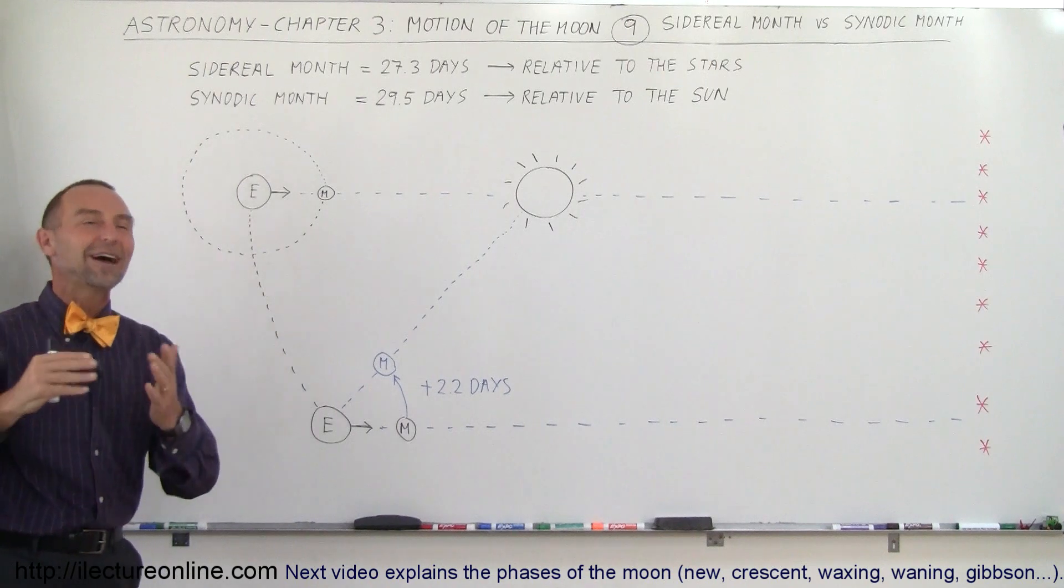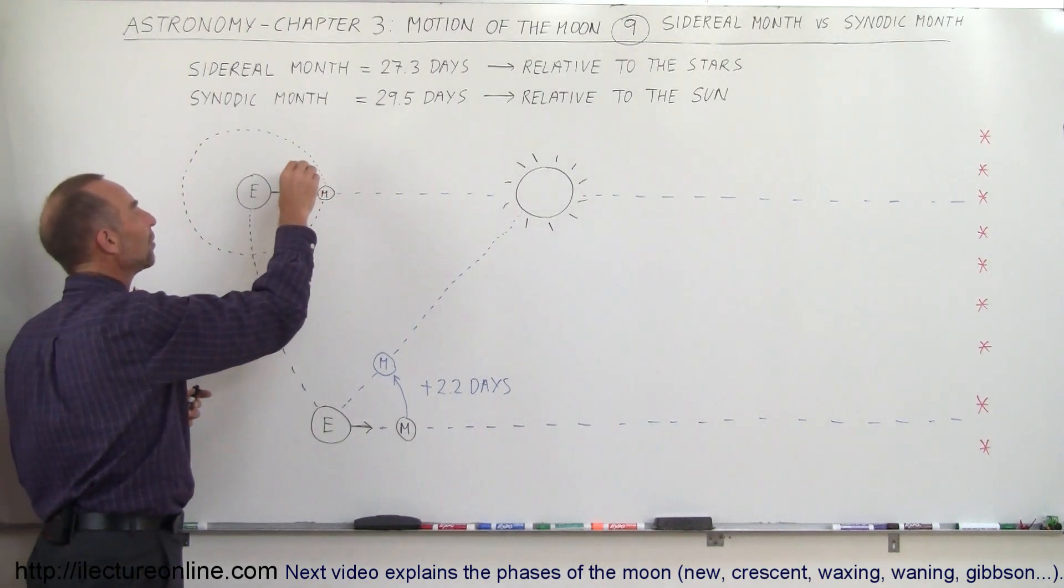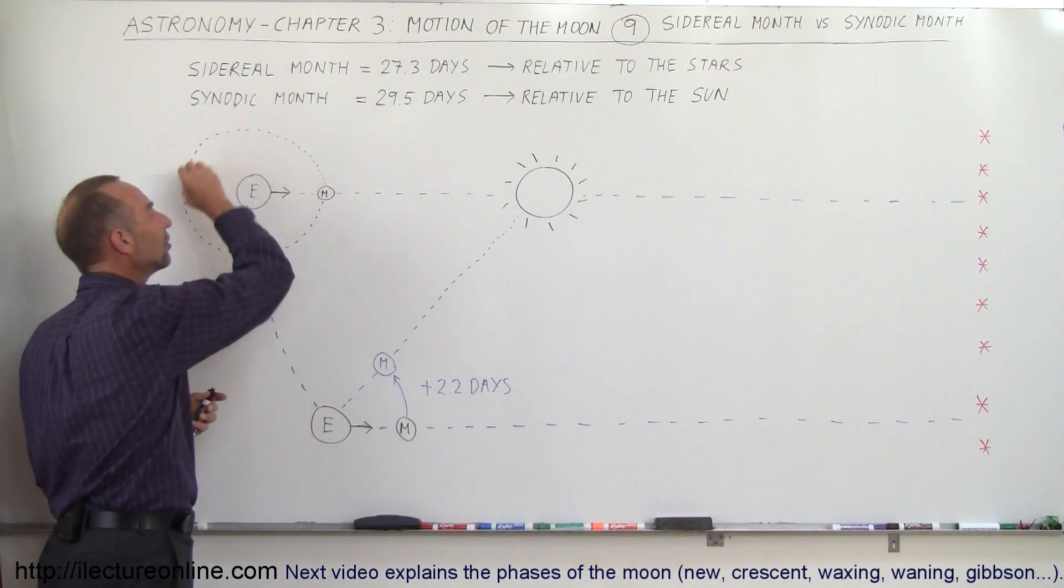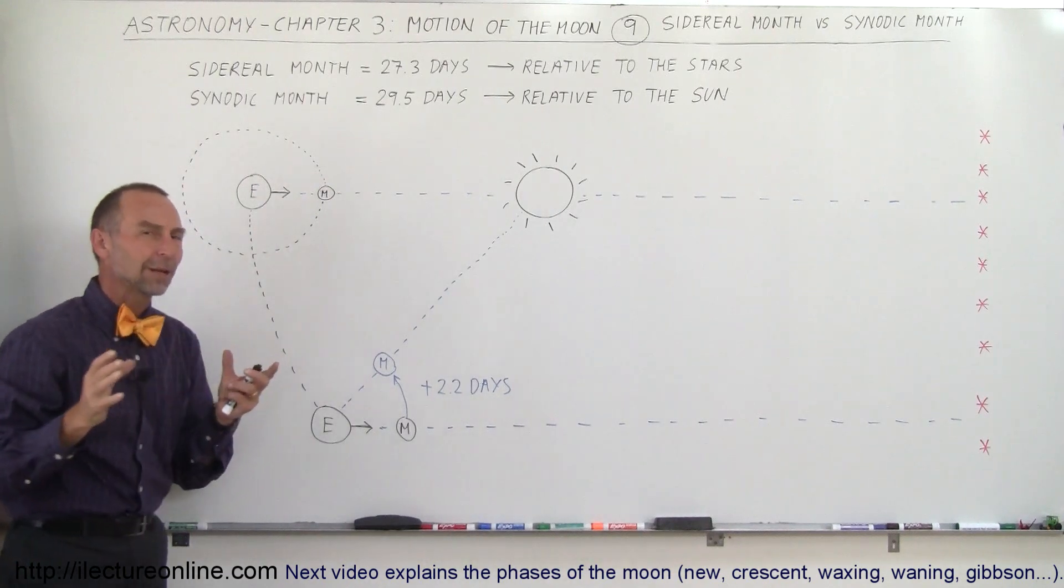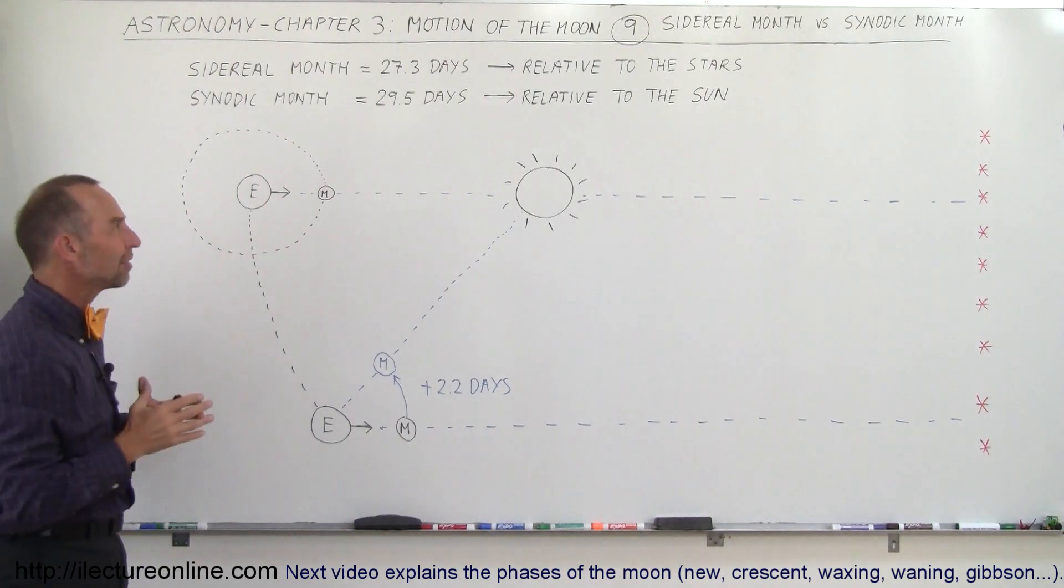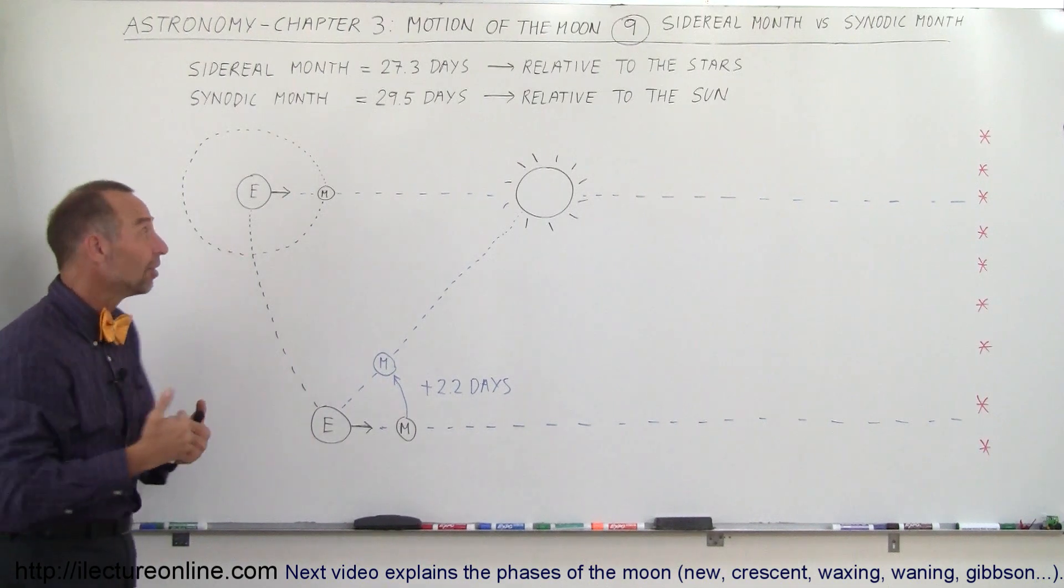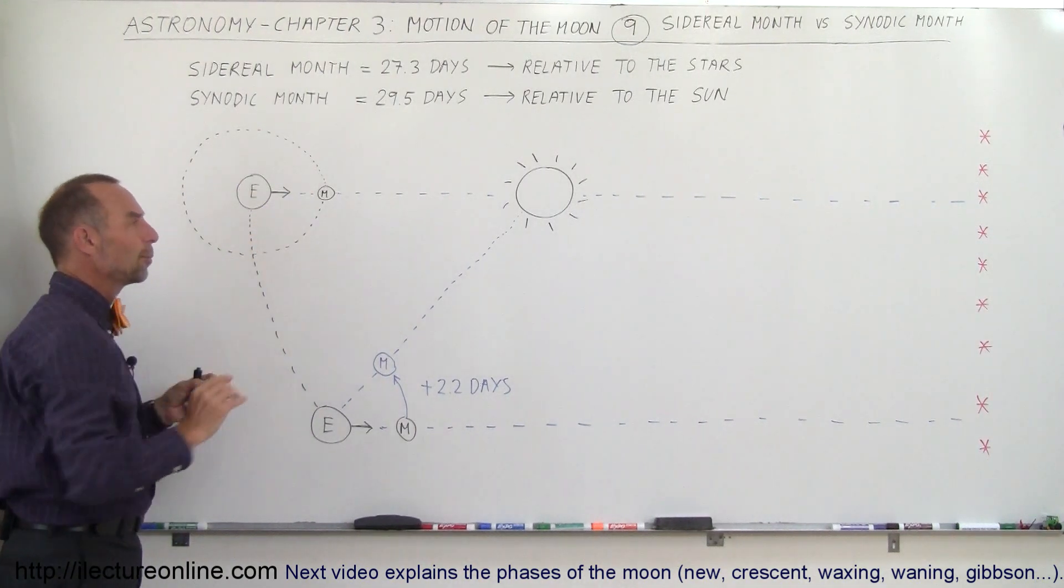It takes 29.5 days for the moon to go from the new moon phase back to the next new moon phase. You say, well wait a minute, why does it take 29.5 days for that when it only takes 27.3 days for the moon to go around the earth once?